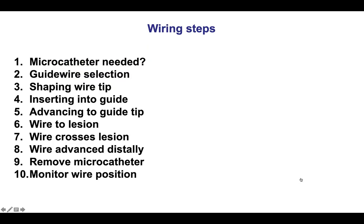In summary, there are 10 steps for performing wiring. Paying careful attention to each of those steps can help optimize the likelihood of successful wiring, as well as maintaining wire position and avoiding complications. Thank you.